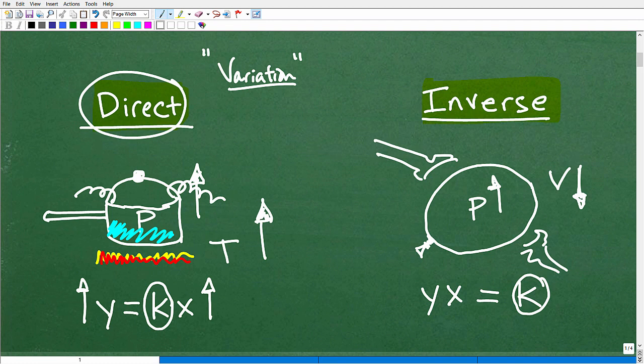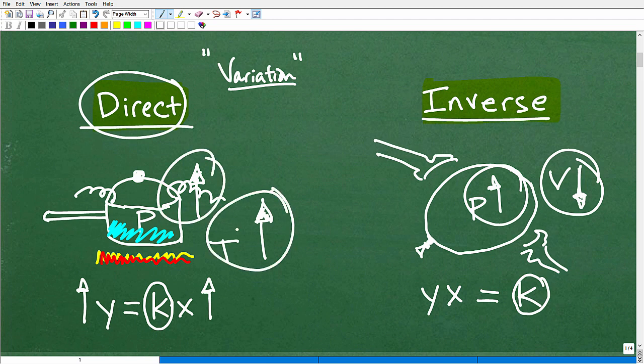The pressure is going to go up. So this has an inverse relationship. As this goes down, this goes up. Whereas our other example, as this goes up, this goes up. As temperature goes up, pressure goes up. Here, if I decrease the volume, okay, by bringing this in, pressure is going to go up. So this is inversely, these two things vary inversely.